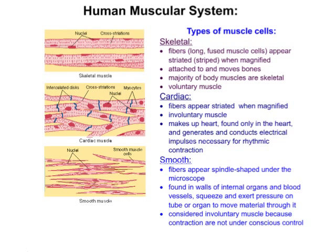Cardiac muscle fibers also appear striated when magnified. They are involuntary because their contractions are not under conscious control. Cardiac muscle is found only in the heart, and cardiac muscle cells generate and conduct the electrical impulses necessary for rhythmic contraction. The third type, smooth muscle cells, appear spindle-shaped under the microscope. They are found in the walls of internal organs and blood vessels, and their function is to squeeze and exert pressure on tubes or organs to move materials through them. They are also involuntary.